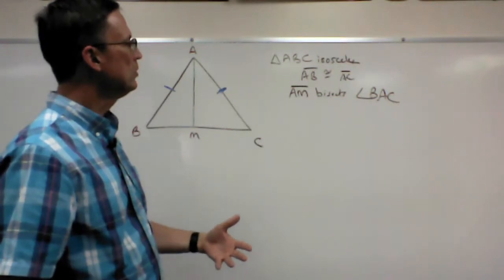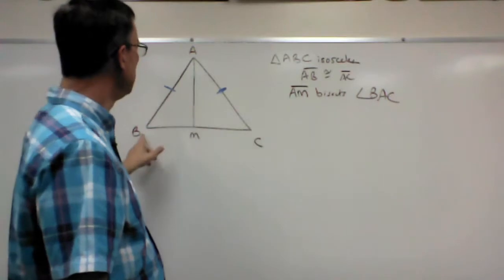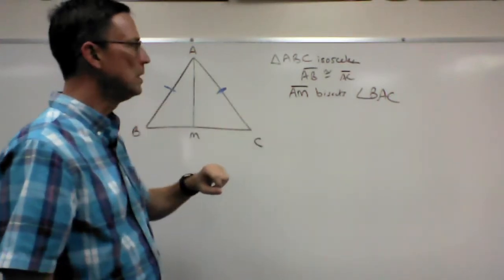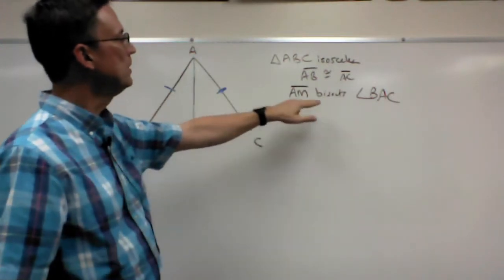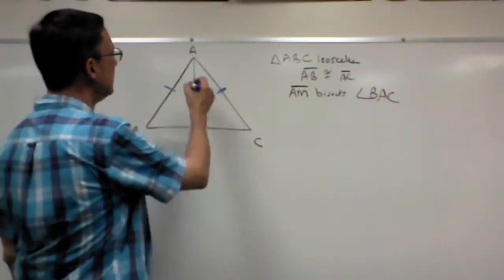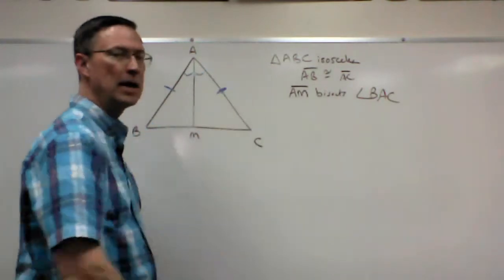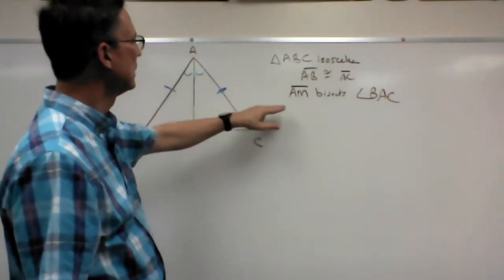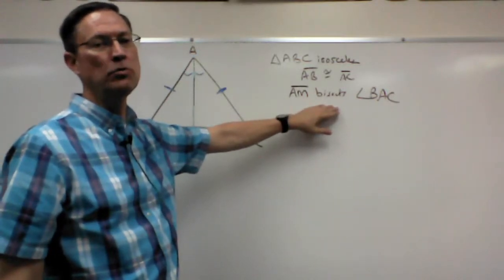Now it also tells us that AM bisects angle BAC. And so we know from the definition of an angle bisector that if it bisects, then this angle here must be equal to that angle. That's the definition of bisecting. So they told us that, because they told us that, we have to use that.